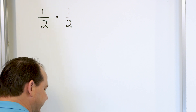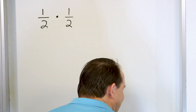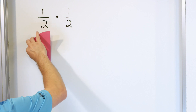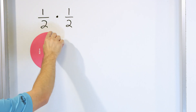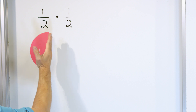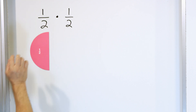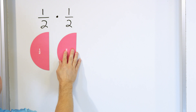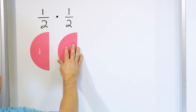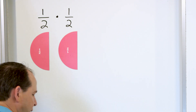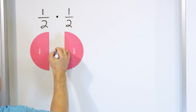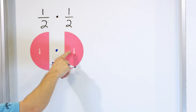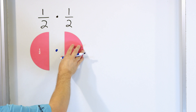Before we get started, I want to represent what these fractions actually mean. The first fraction is one half — if you have a whole circle and you cut it into two pieces and take one, then we say we have a half. And we're multiplying this fraction one half by this other fraction one half, so you're taking the first fraction and multiplying it by the second fraction.